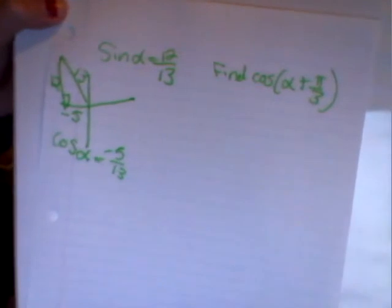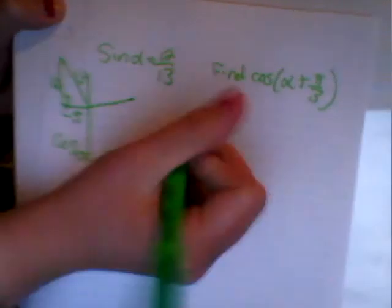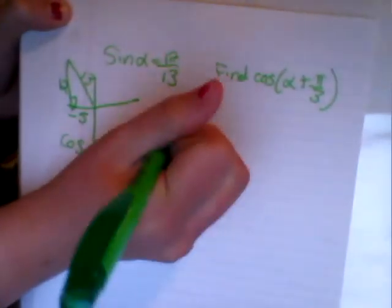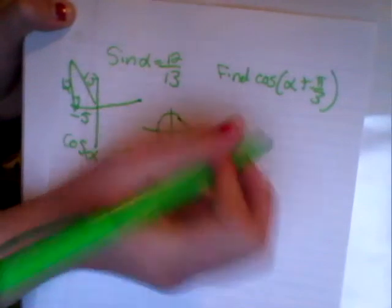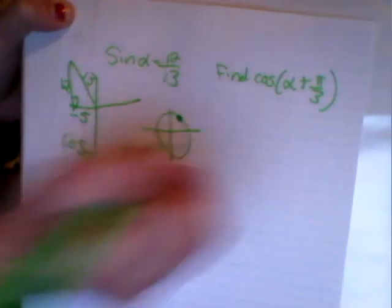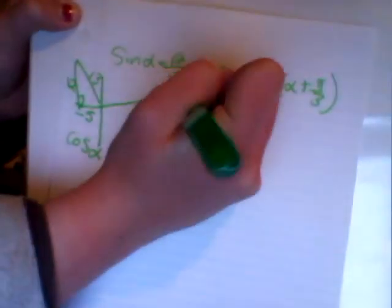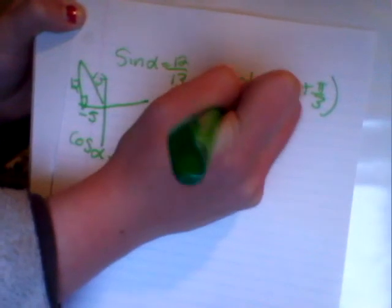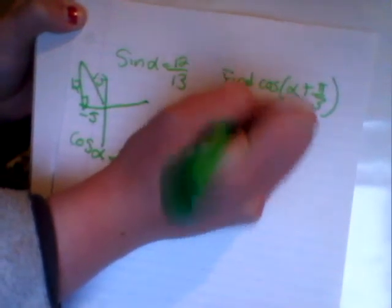And we're finding pi over 3. Pi over 3 on the unit circle is right there. And the ordered pair is 1 half, square root of 3 over 2.